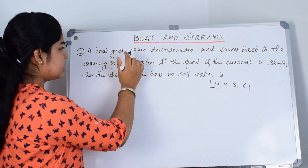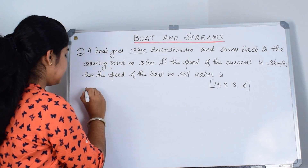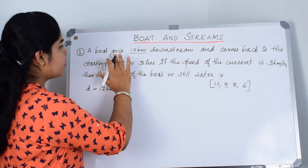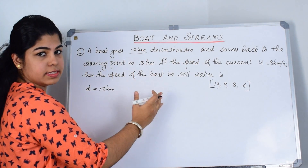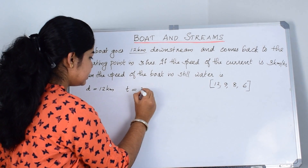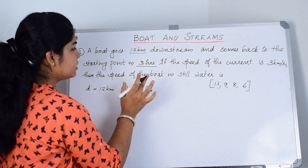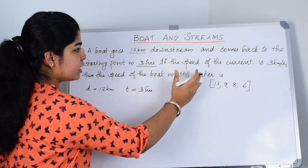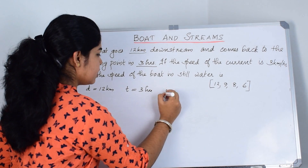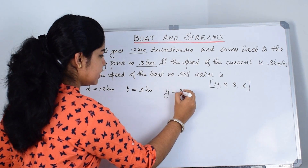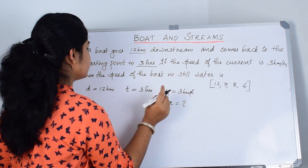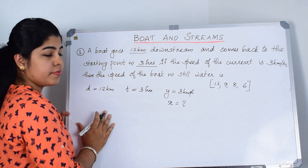I'm taking D as 12 kilometers. The boat goes downstream and comes back to the starting point in 3 hours, so the total time T is 3 hours. The speed of the current Y is 3 kilometers per hour. We need to find the value of X, the speed of the boat in still water.